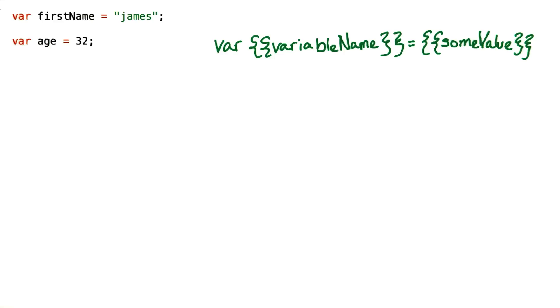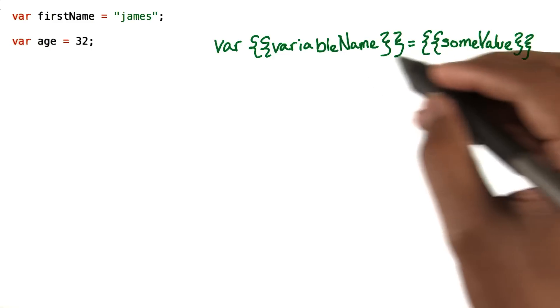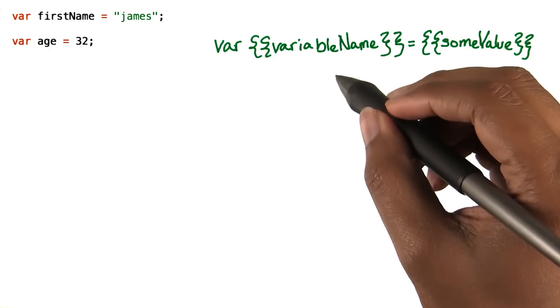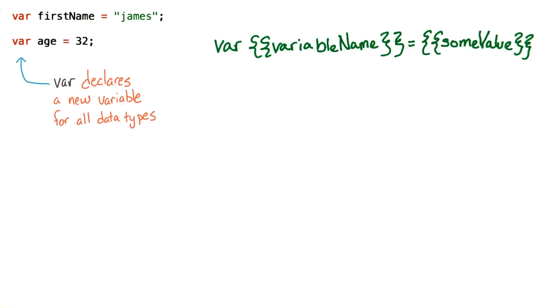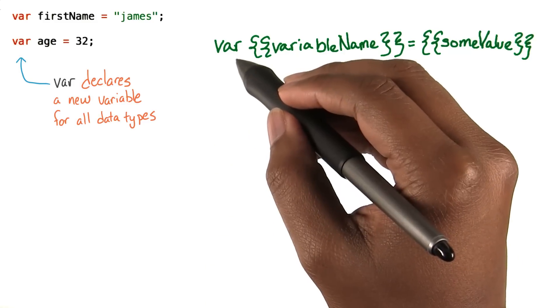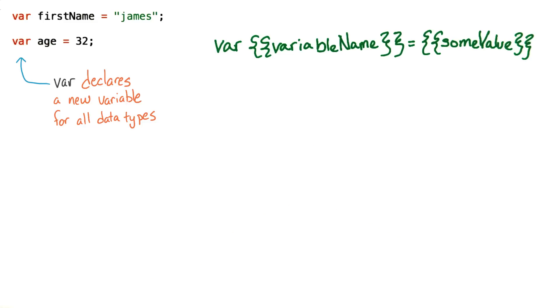Like other programming languages, JavaScript gives us a way of saving data in the form of variables. The syntax looks like this: var variable name equals some value. To declare a new variable, you begin with the keyword var, regardless of the data type you're saving.